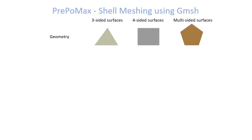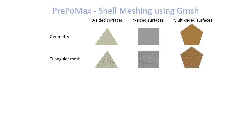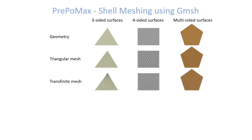We have three different geometries: three-sided, four-sided, and a multi-sided surface, and we can mesh them with triangular finite elements. This is the same meshing capability as we can already get with the NetGen mesher in previous versions of PrePoMax.